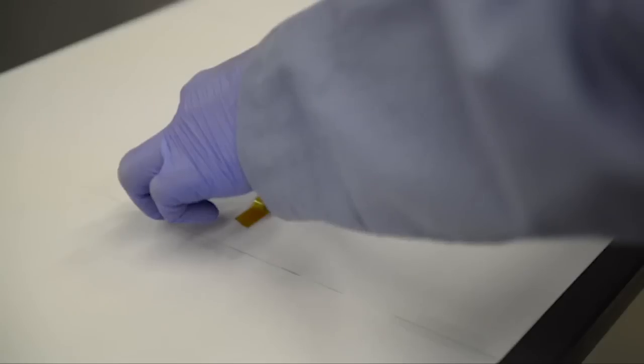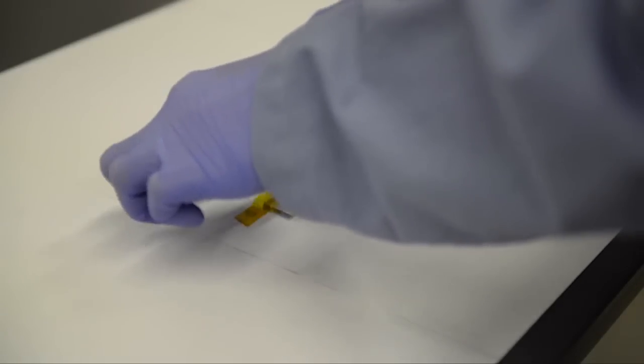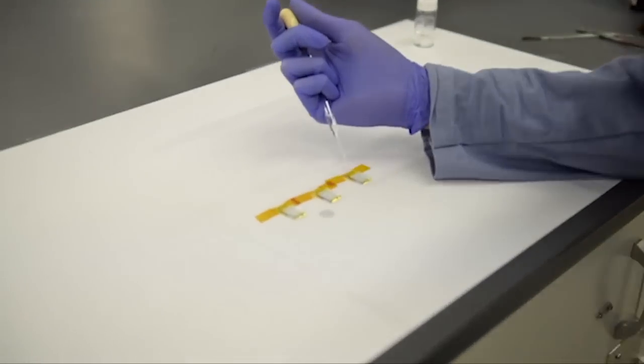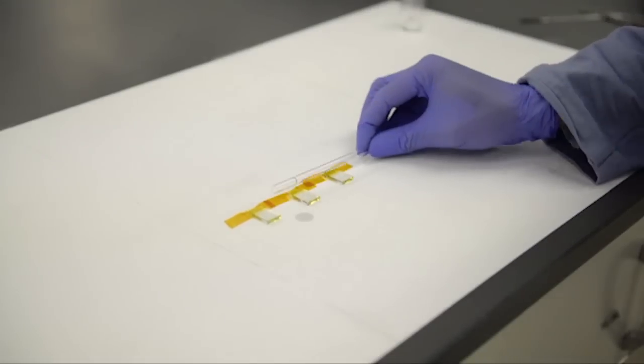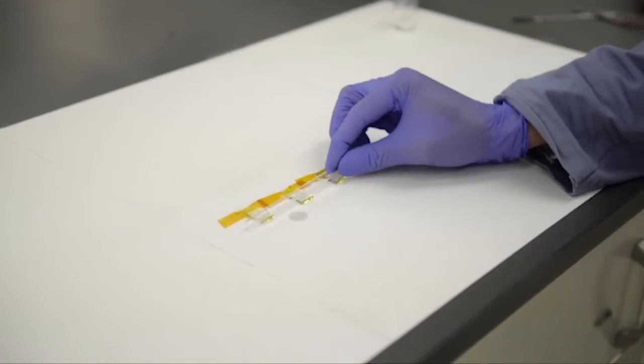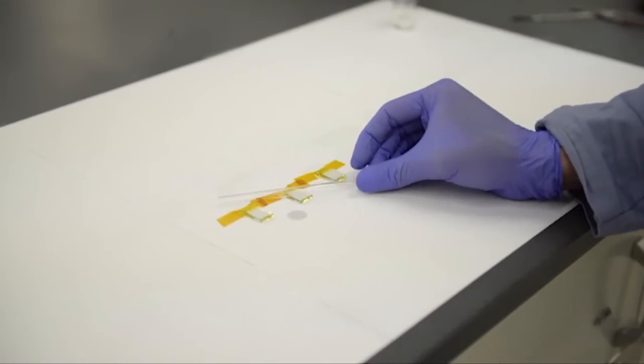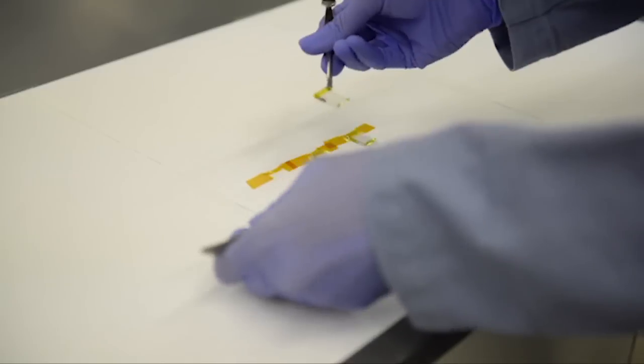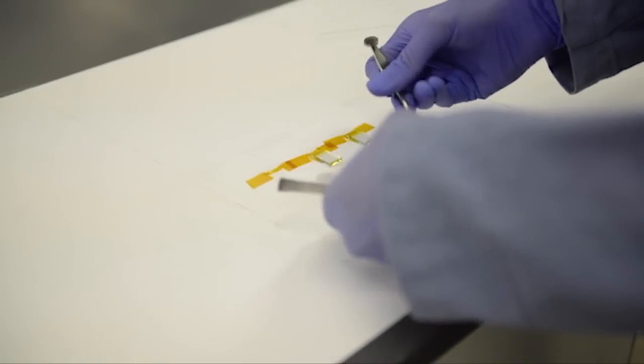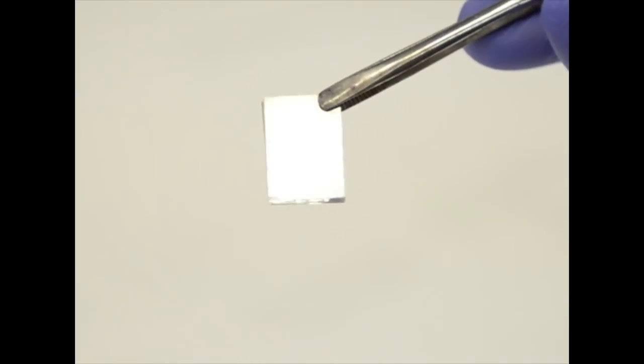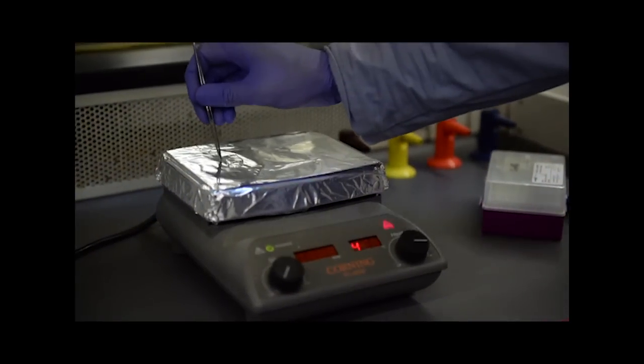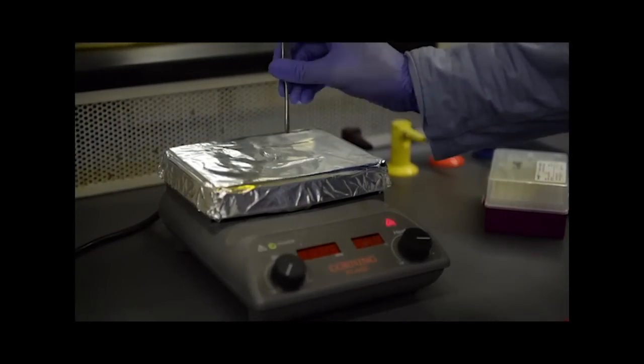To deposit the titania layer, place the FTO glass on the benchtop with the conductive side facing up. We deposit one drop of titania solution onto the glass and spread it across the surface with a glass pipette. Then we remove the tape entirely and place the glass piece on a hot plate facing up. We heat it at 450 degrees Celsius for about 20 minutes and let it cool down for about 10 minutes.